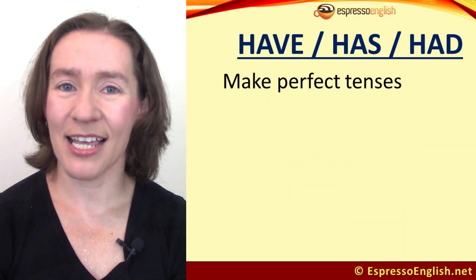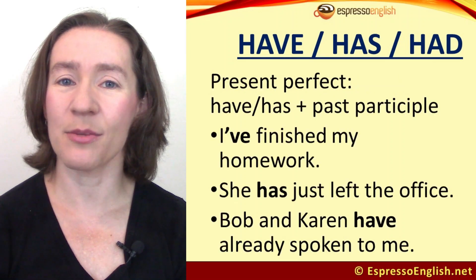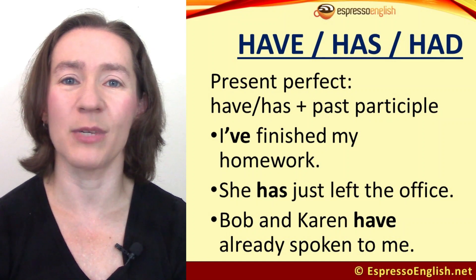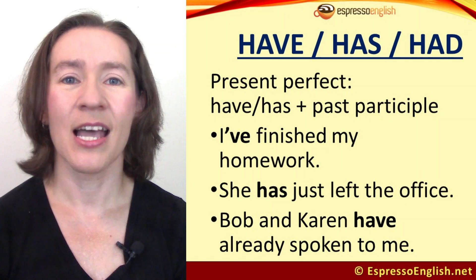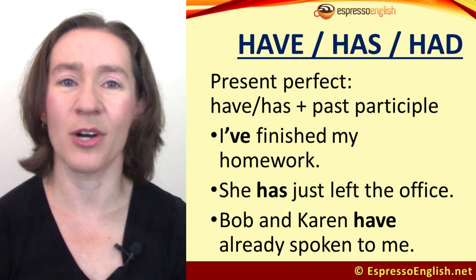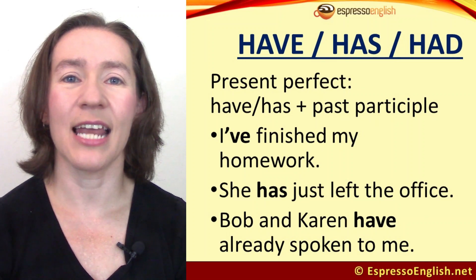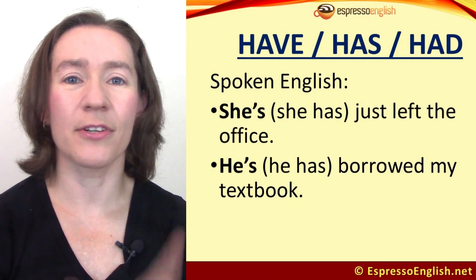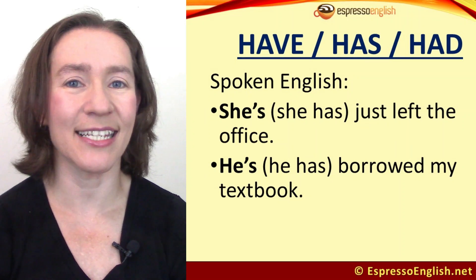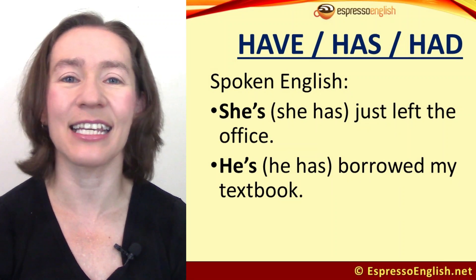Our third and last basic helping verb is have, and we use this in perfect tenses like the present perfect. Use have with I, you, we, and they, and has with he, she, and it. For example: I've finished my homework; she has just left the office; Bob and Karen have already spoken to me. In spoken English we often shorten 'he has' and 'she has' to 'he's' and 'she's' — for example: she's just left the office; he's borrowed my textbook.